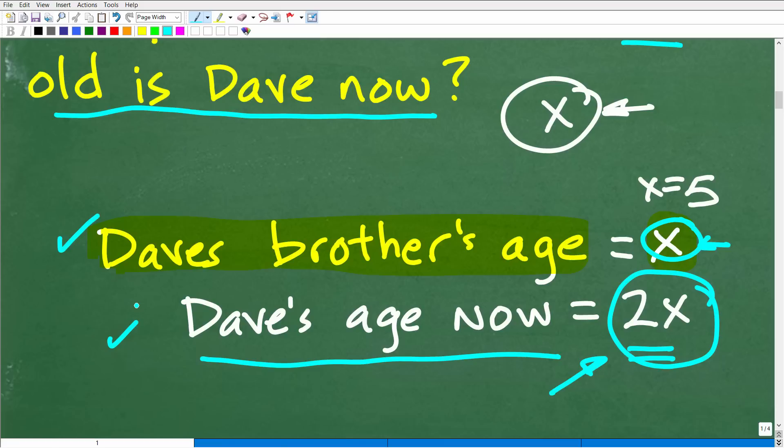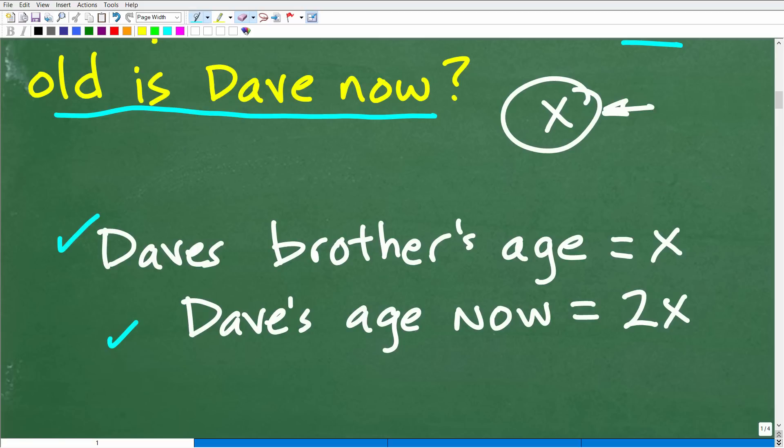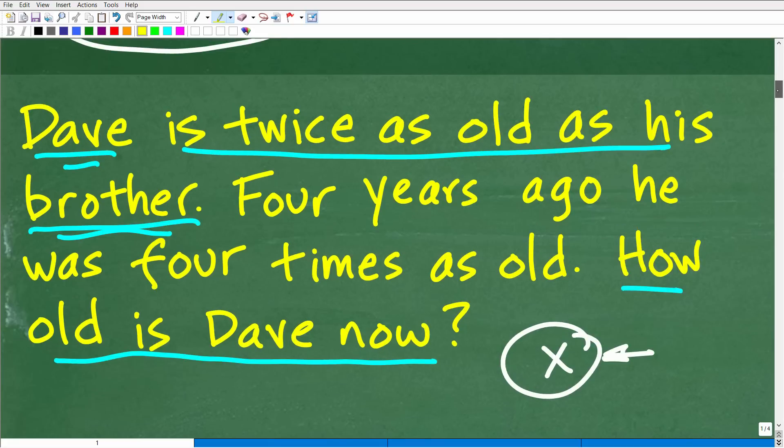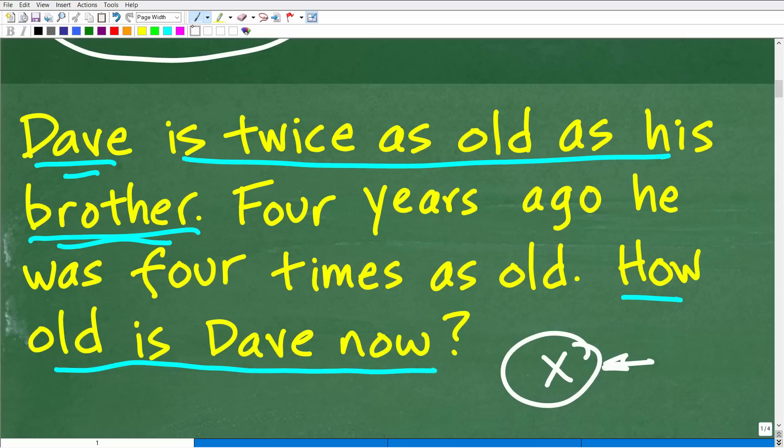Really what I'm looking for to solve this problem is 2x. If I know what x is, which is Dave's brother's age right now, I can get Dave's age by simply multiplying by 2. You have to really stop and think about the problem and think about what you're going to assign for your variables. There are different approaches to this problem. You could let x equal Dave's age. That's fine too, but your equations will look a little bit different. Let's go ahead and read the problem and make sure we understand what's going on.